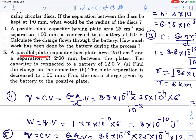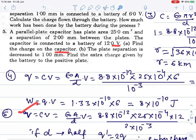Moving to the next question: A parallel-plate capacitor has plate area 250 cm² and separation 2.00 mm between the plates. The capacitor is connected to a battery of 12.0 V. (a) Find the charge on the capacitor. (b) The plate separation is decreased to 1.00 mm. Find the extra charge given by the battery to the positive plate.